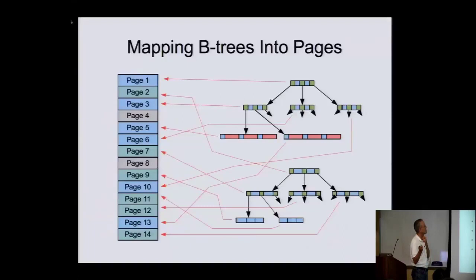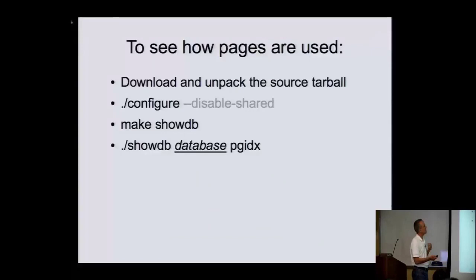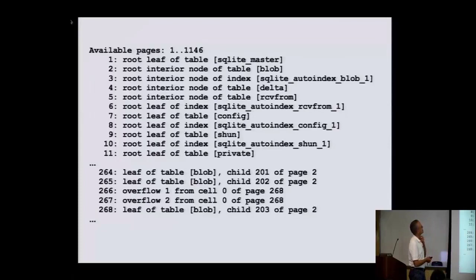There are multiple B-trees in the same file, and individual pages can be interleaved all through the file. The only thing you need to know is what the root page of each B-tree is. You can use the showdb utility — do configure, then make showdb — to decode the file format: run showdb on a database and it shows you what each page of the database file is used for. We can see that the first page is both a root and a leaf for a table that fit on a single page.